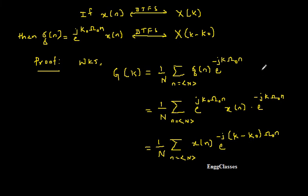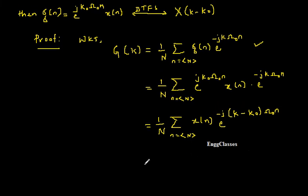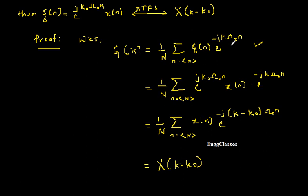Now compare this expression with the original DTFS expression for G of k. In place of g of n we now have x of n, and in place of k we have k minus k-naught. Everything else is in place, so this expression must equal capital X of k minus k-naught. Earlier it was G of k; now in place of g of n we have x of n, and in place of k we have k minus k-naught. Hence this expression is X of k minus k-naught. This is the simple proof of the frequency shift property.